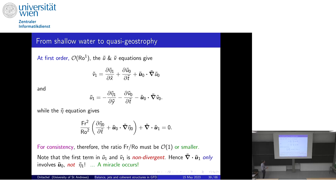The first terms in u₁ and v₁ are non-divergent, so when I take the divergence of u₁ and v₁ to calculate that term, the η₁ terms cancel. Taking d/dy of one and d/dx of the other, those terms cancel, and what's left involves only the leading-order fields. That's the miracle of deriving the QG model — it doesn't happen in lots of PDE calculations, but for QG it does.